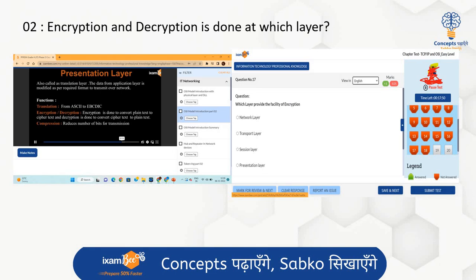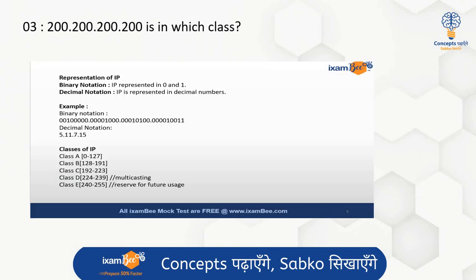The third question is related to an IP address and which class it belongs to. For example, an IP starting with 200 belongs to Class C because the range of Class C is 192–223. If you study the content and understand the concept, you will be able to solve any similar question based on our course material.